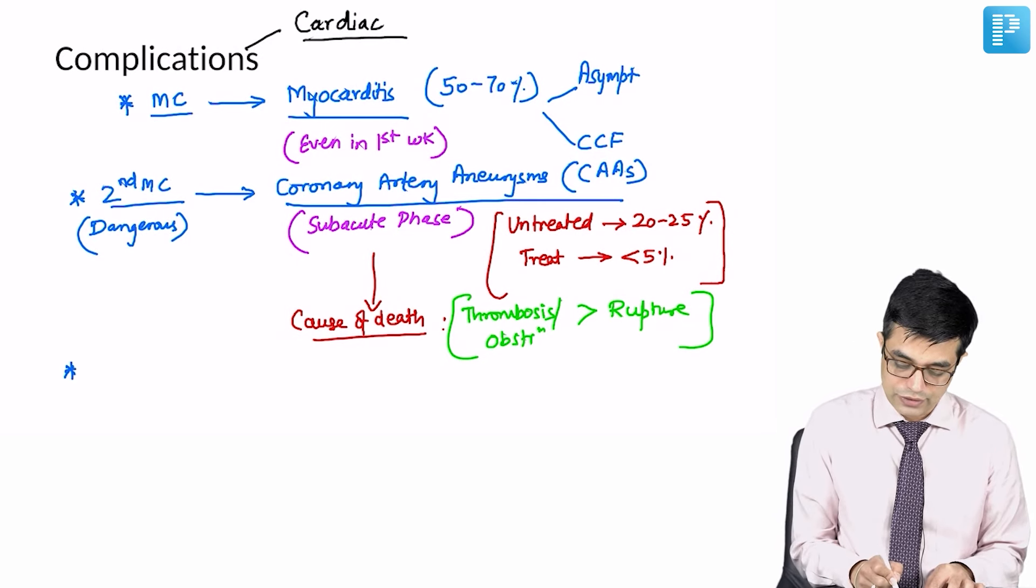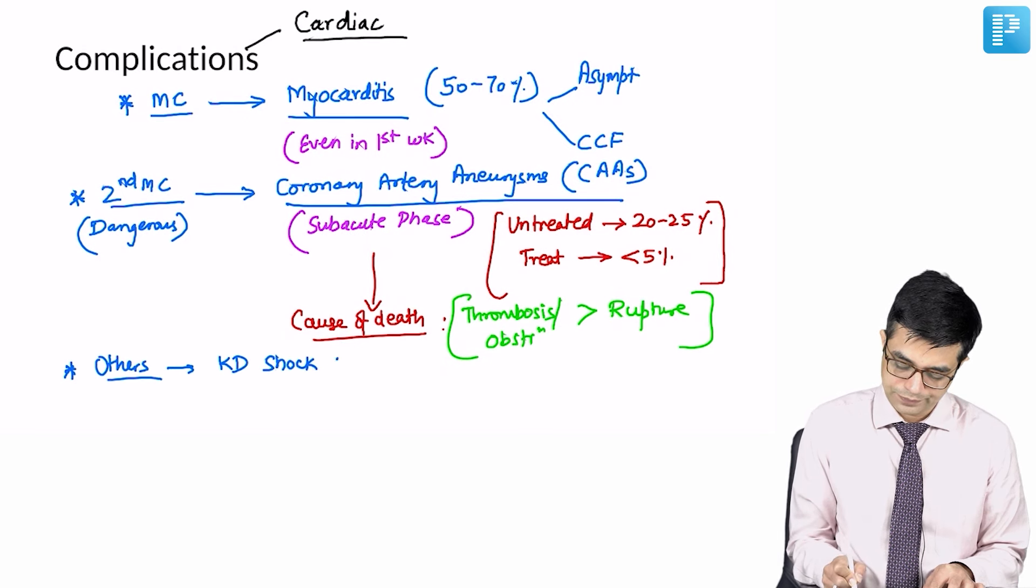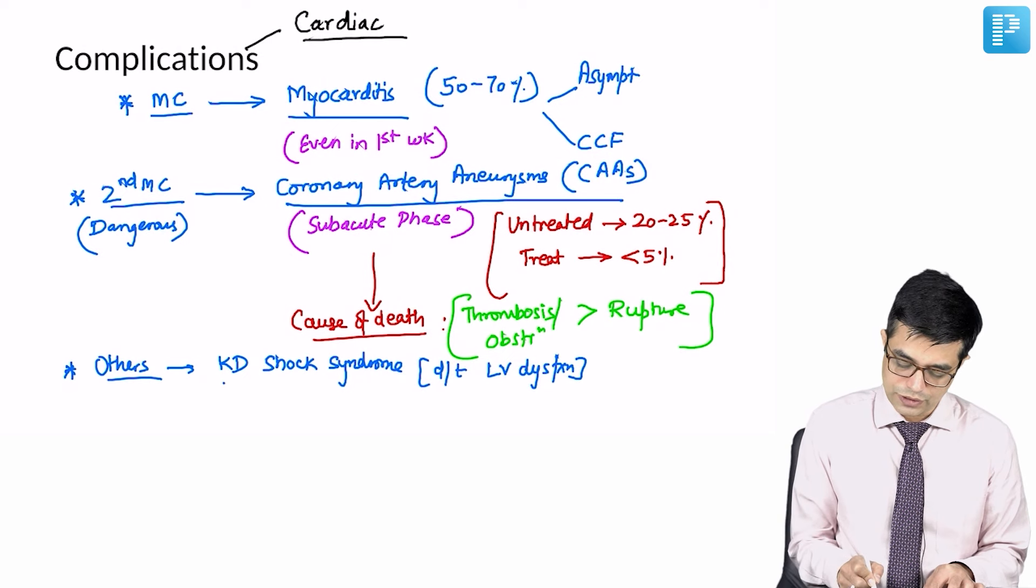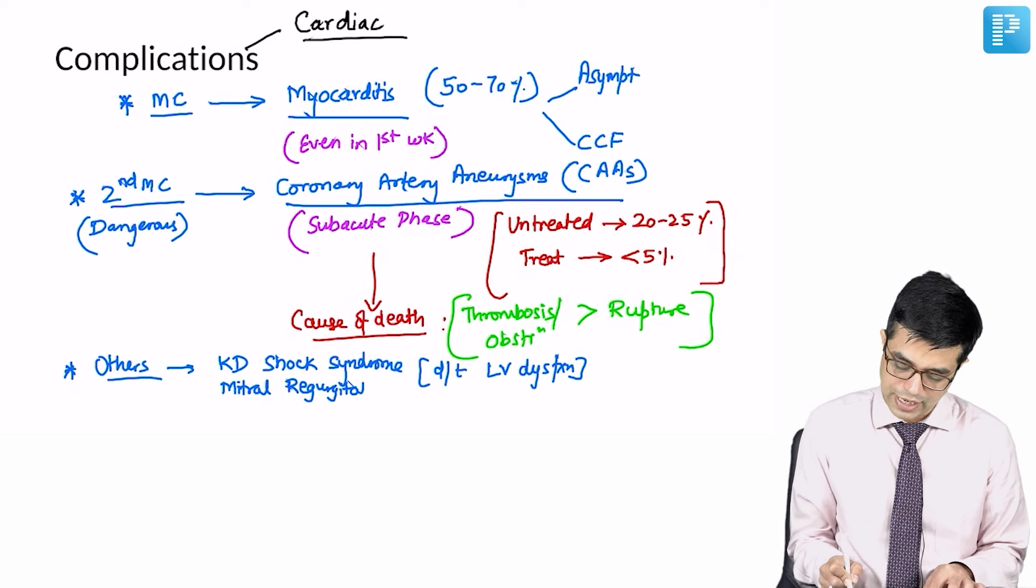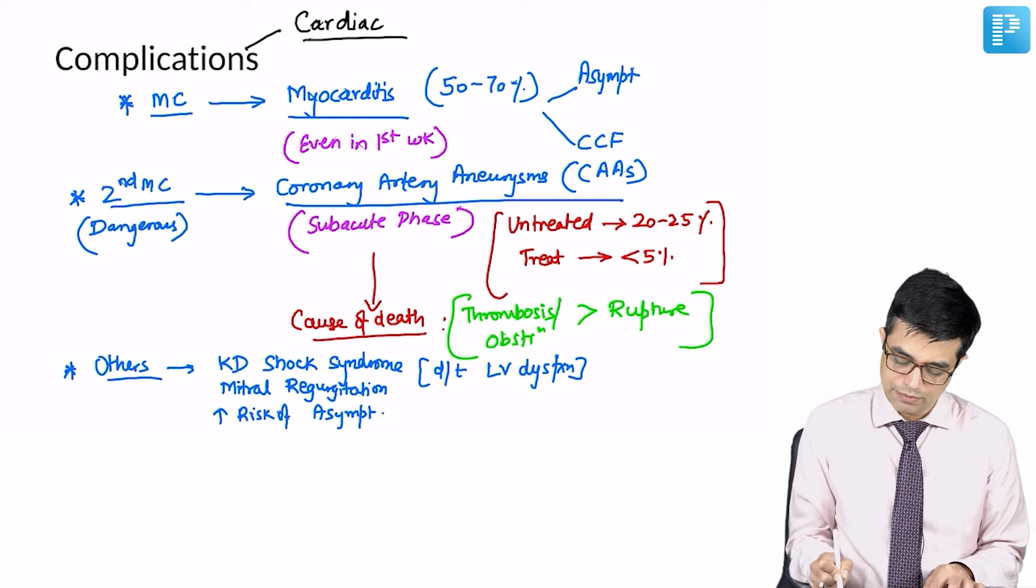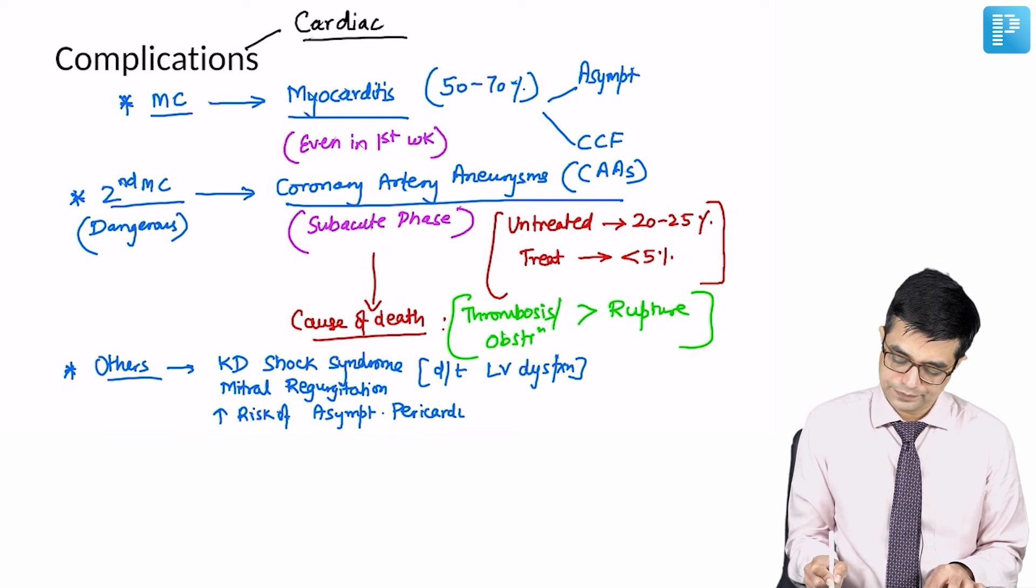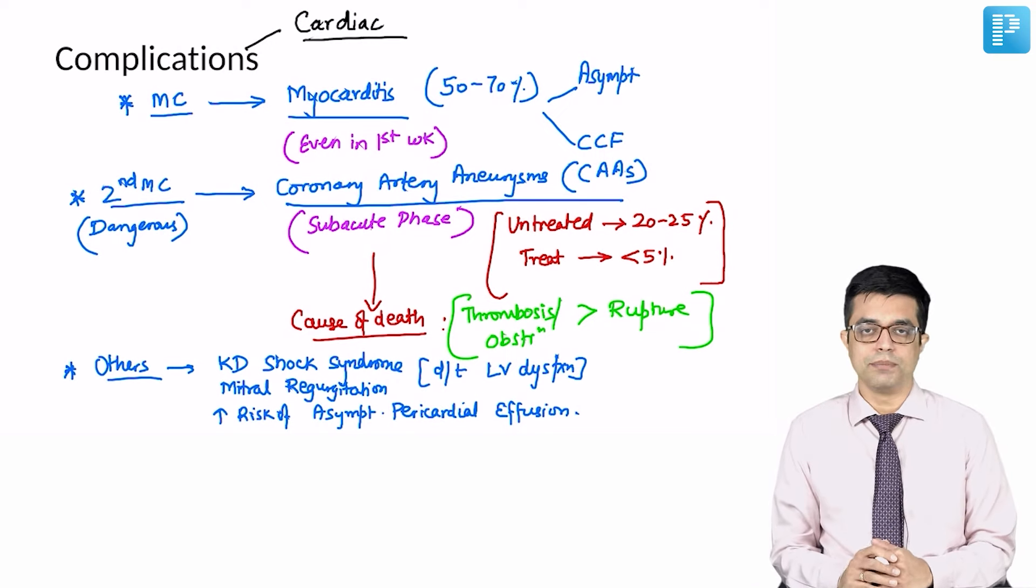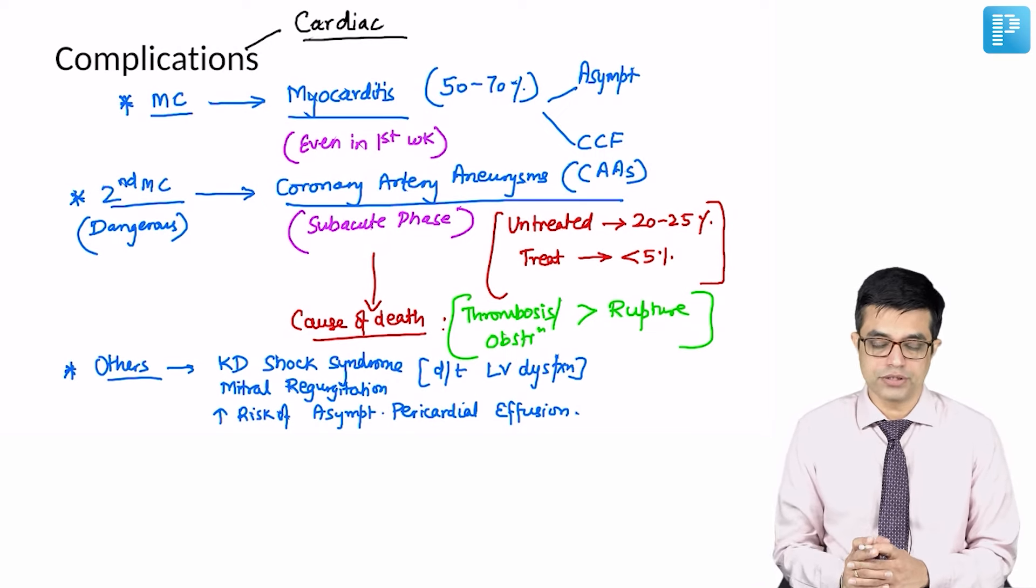The other cardiac complications which are commonly seen include Kawasaki disease shock syndrome. Kawasaki disease shock syndrome occurs due to left ventricular dysfunction. It includes mitral regurgitation and it includes increased risk of asymptomatic pericardial effusion. Asymptomatic pericardial effusion, but frank cardiac tamponade is not seen. So these are the complications of KT.